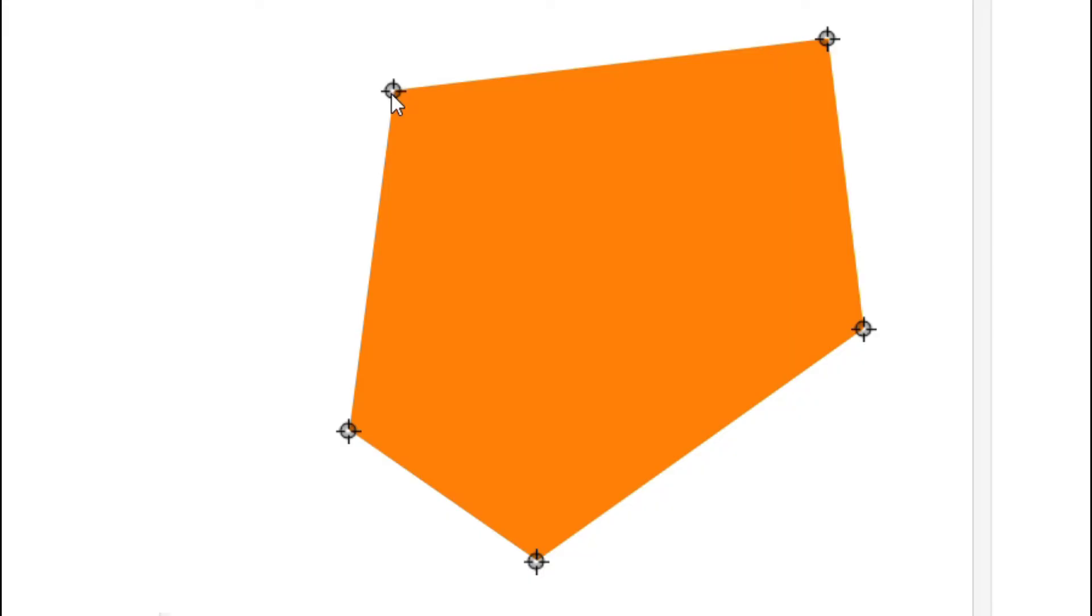A simple convex polygon is depicted here. When we drag one of its vertex to any other side, it becomes a self-intersecting polygon.